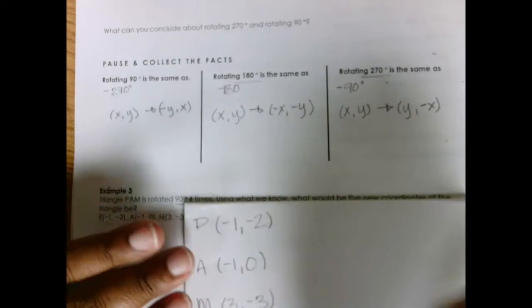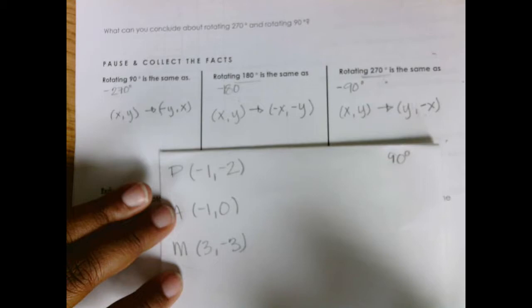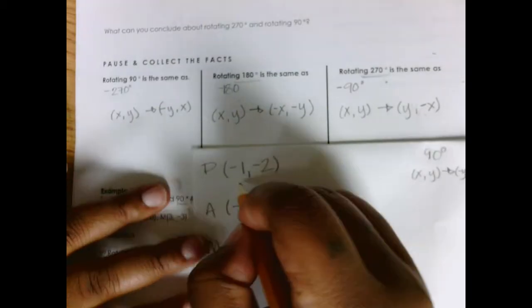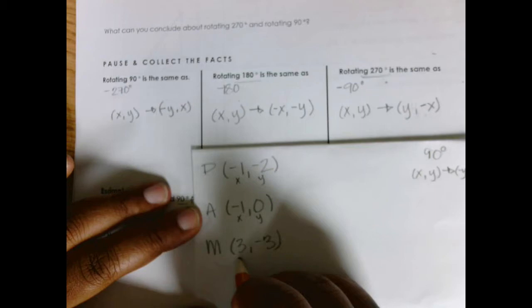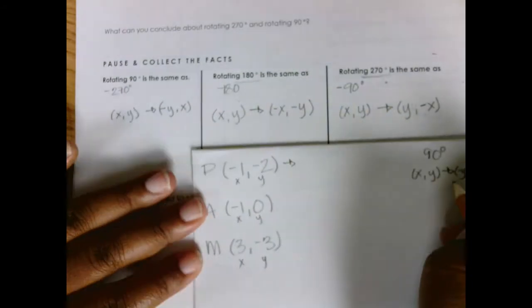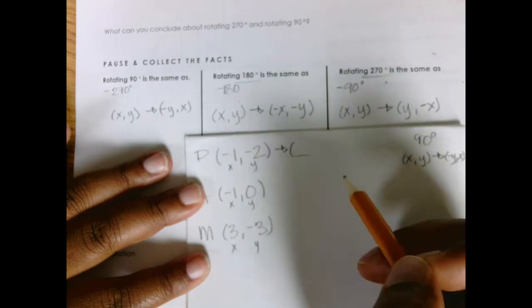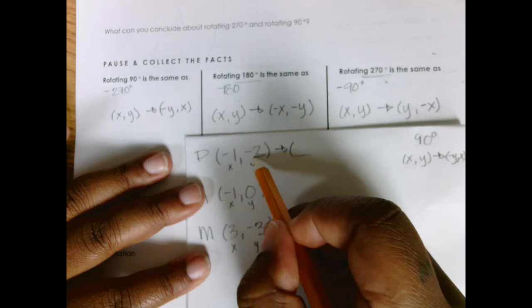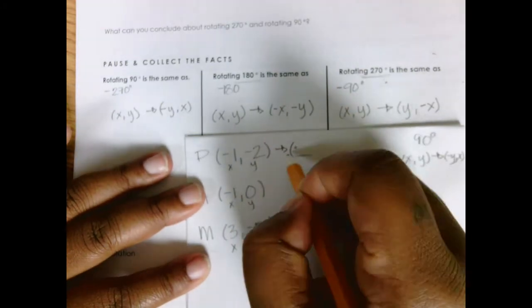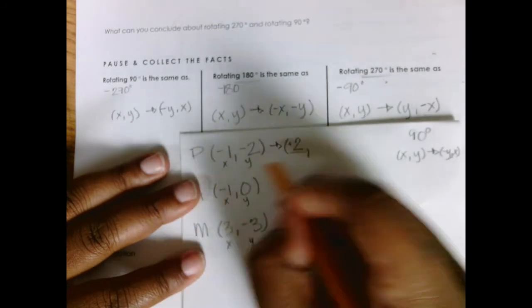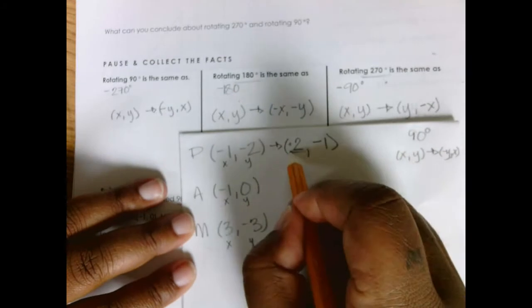These are the original coordinates for PAM. For the first rotation at 90 degrees, the rule is x comma y turns into negative y comma x. I'll label all my x's and y's first. The y is going to become my new x, but it becomes negative. Since y is negative 2, negative negative 2 is just positive 2. Then my original x stays the same and becomes the new y, giving 2 comma negative 1.